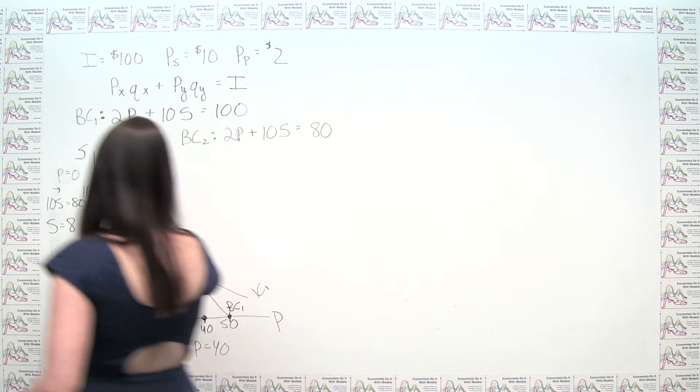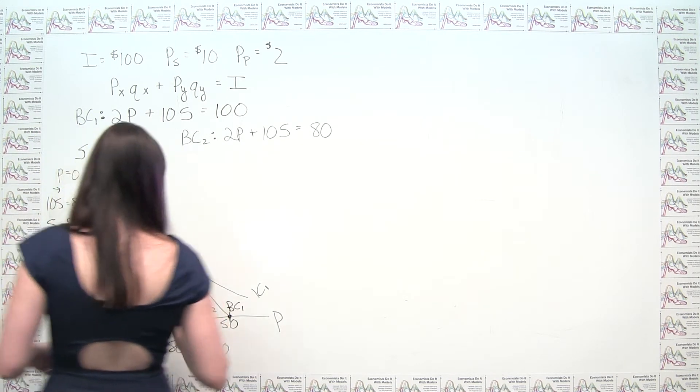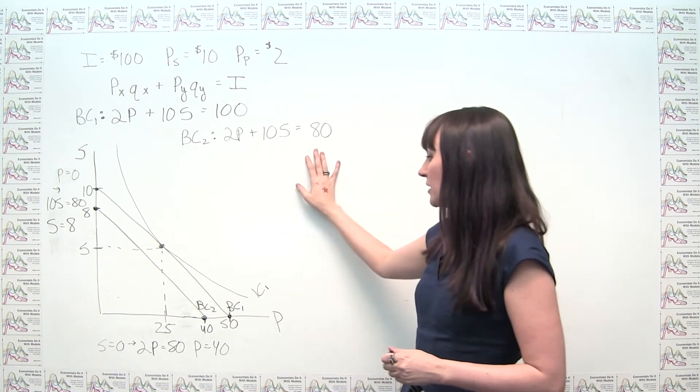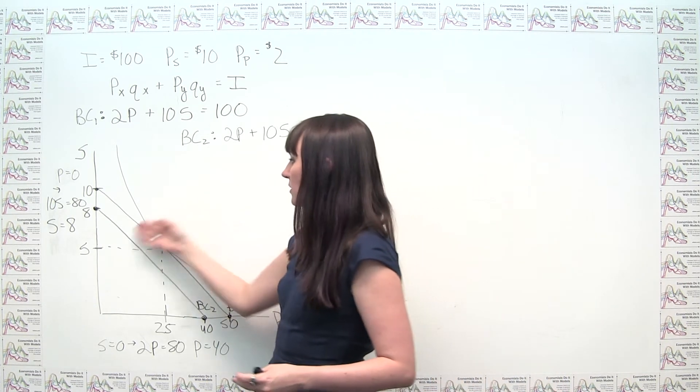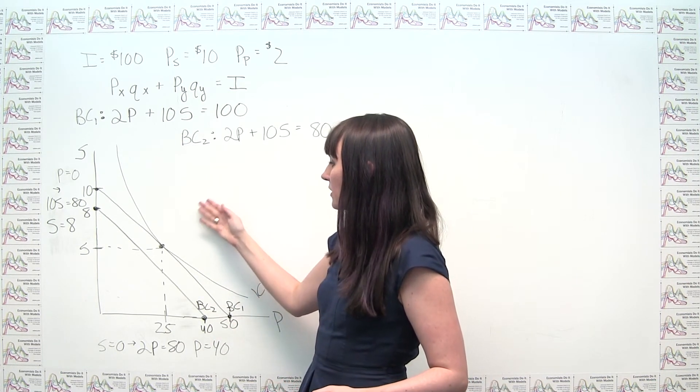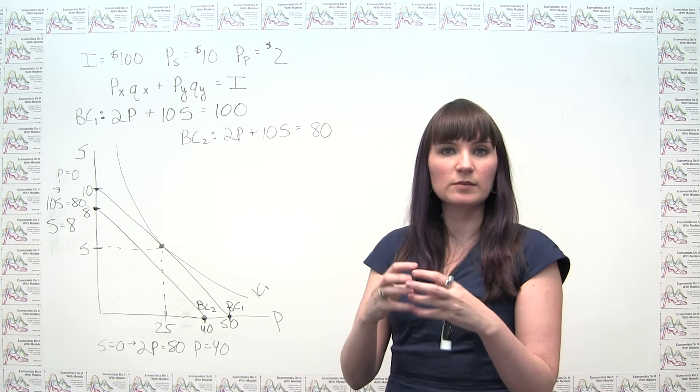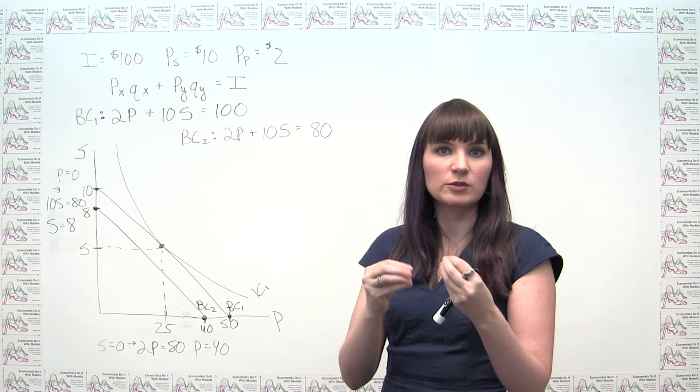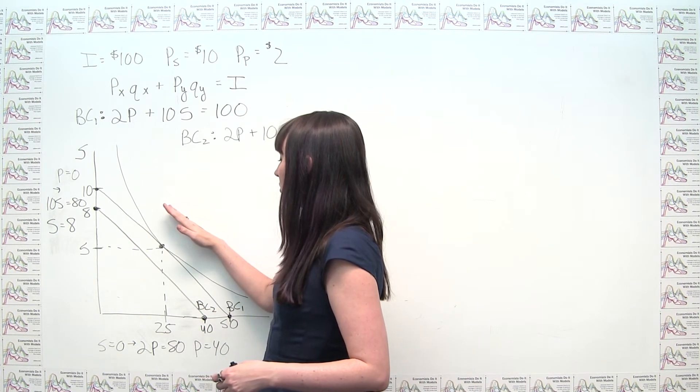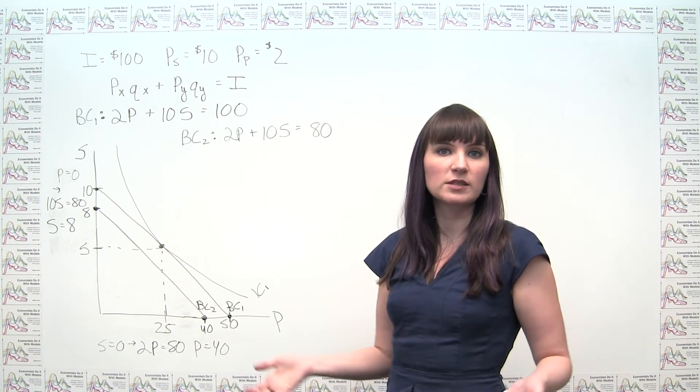And we get a new budget constraint that looks like this here. And this confirmed our suspicion that when all we have is an income change, we just get a parallel shift of our budget constraint. And we can see that decreases in income result in shifts towards the origin, or a decrease in our possible consumption choices. An increase in income, on the other hand, would shift the budget constraint away from the origin, therefore increasing our set of potential consumption choices.